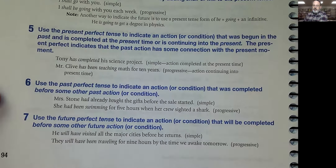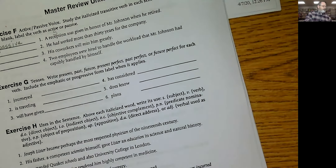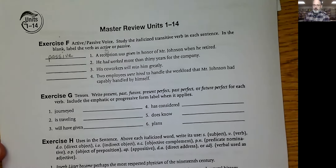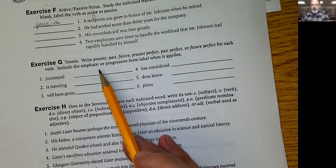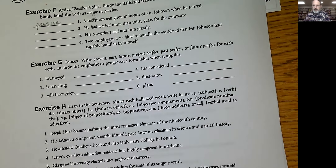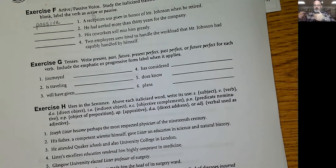They will have been traveling for nine hours by the time we awake tomorrow. So tomorrow at some point we're going to awake, but before that they will have been traveling nine hours — both are in the future but they will have finished traveling before they wake up. The emphatic form uses the word 'did' — like 'yes, I did say that' — that's emphatic, meaning I'm serious about telling you that. And then progressive uses 'ing,' like 'had been running' — that means something continues; it's progressive.